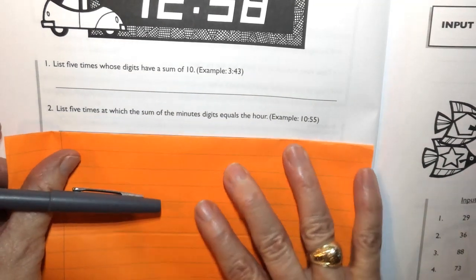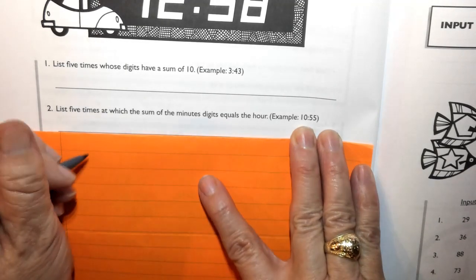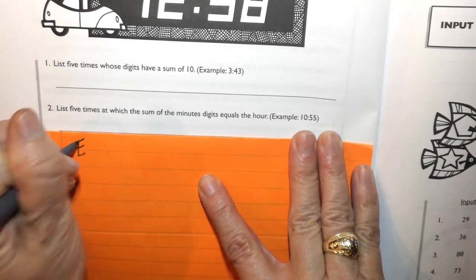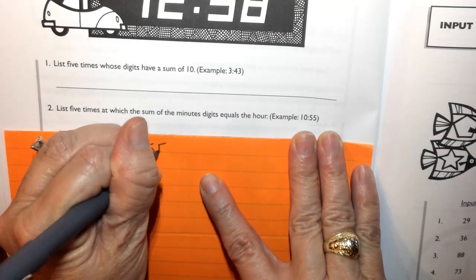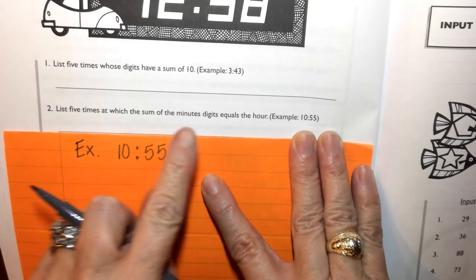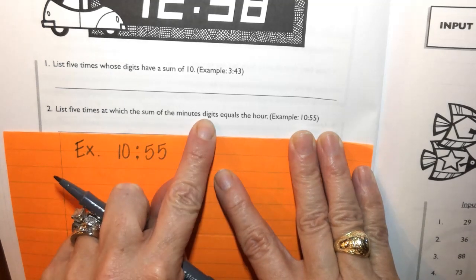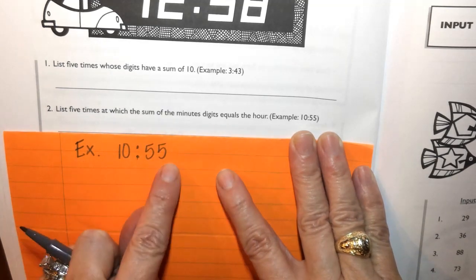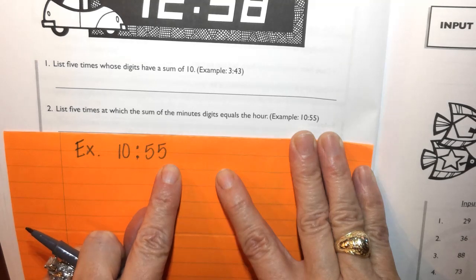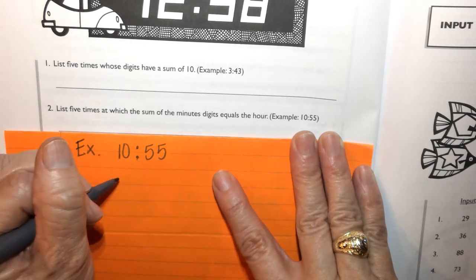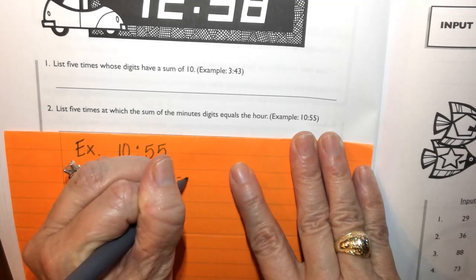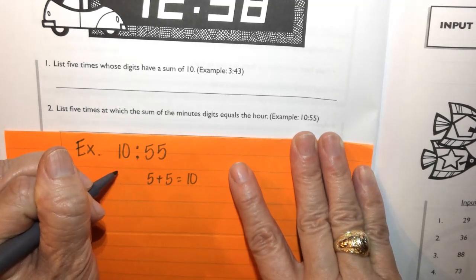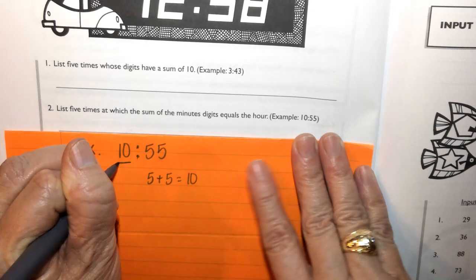So what that means is, for example, we have 10:55. That means that the minutes digits add to equal the hour. So 5 plus 5 is equal to 10, and 10 happens to be the hour that we're talking about.